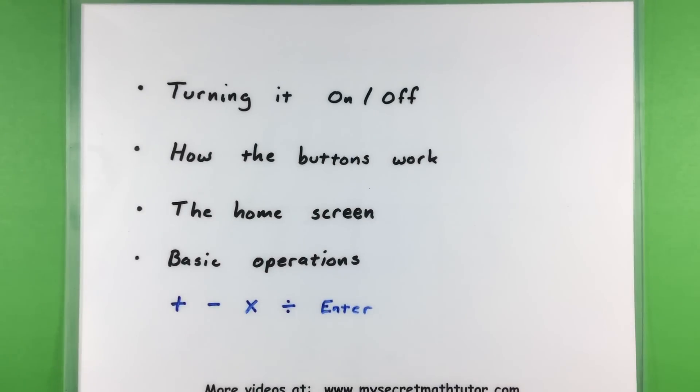Specifically, what I'll cover is how you can turn this thing on and off when you first get it, how some of the buttons work—I know they can be very intimidating, they've got lots of things on there—what your home screen is, and of course some basic operations like how you add, subtract, multiply, divide, and use that enter button. Alright, so let's go ahead and grab our calculators and see what we can do.